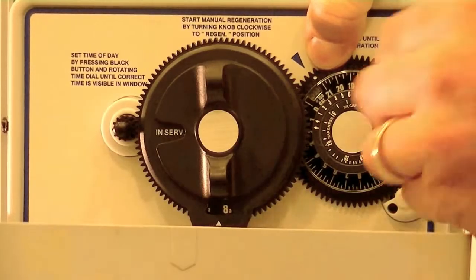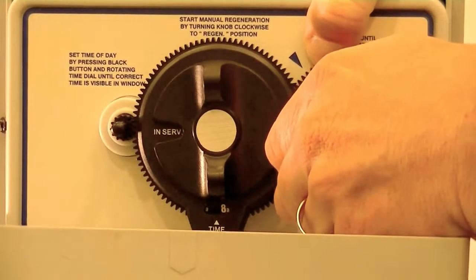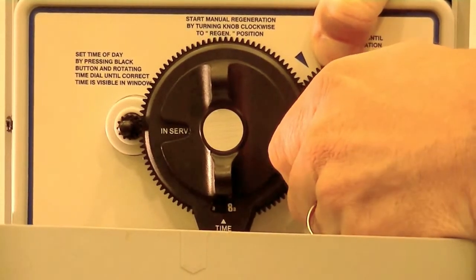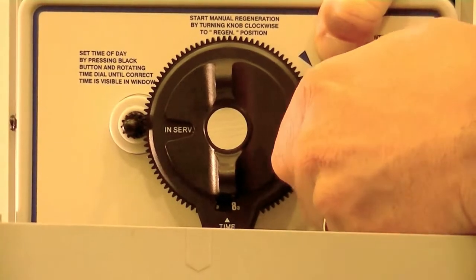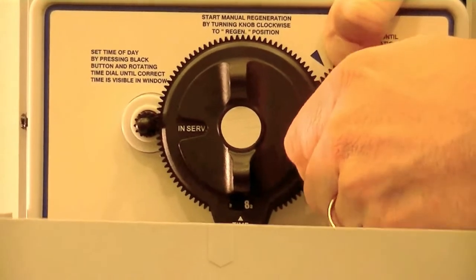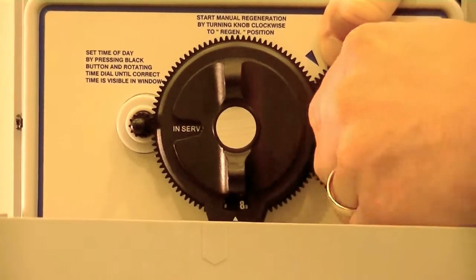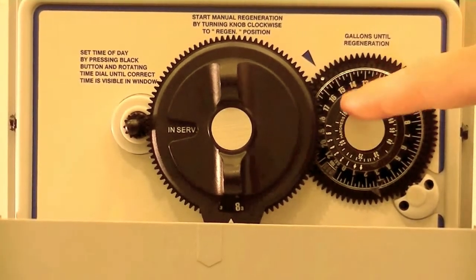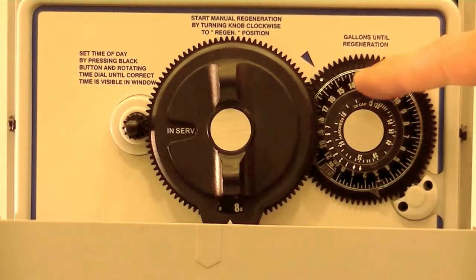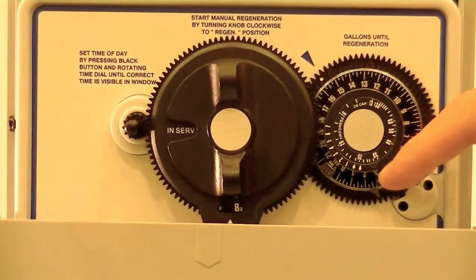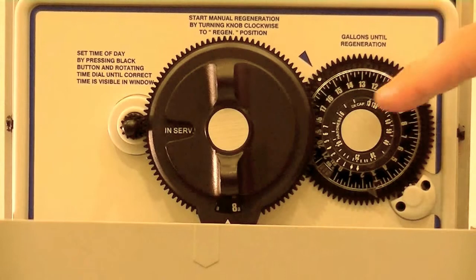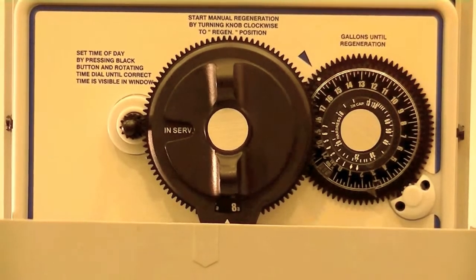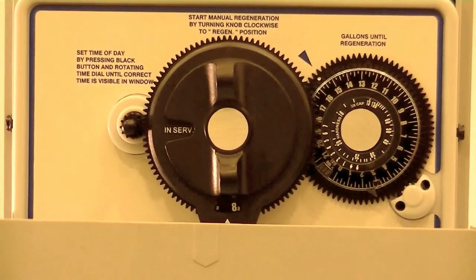You just hold down the white dot, pull out the dial a little bit, and line up the number four in people with the number 20 grains per gallon. And now that's telling us we're right in between 16 and 15, and each number on this outer dial here represents 100 gallons. So we're in between about 1,600 and 1,500 gallons per regeneration.